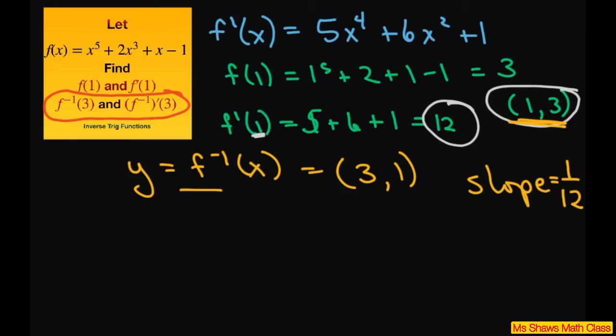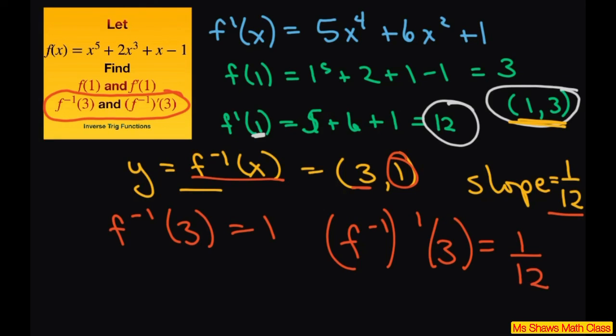So therefore f inverse of 3 is 1, and your f inverse prime of 3 is your slope, which is 1 divided by 12. And that's it. Thank you, have a nice day, bye-bye.